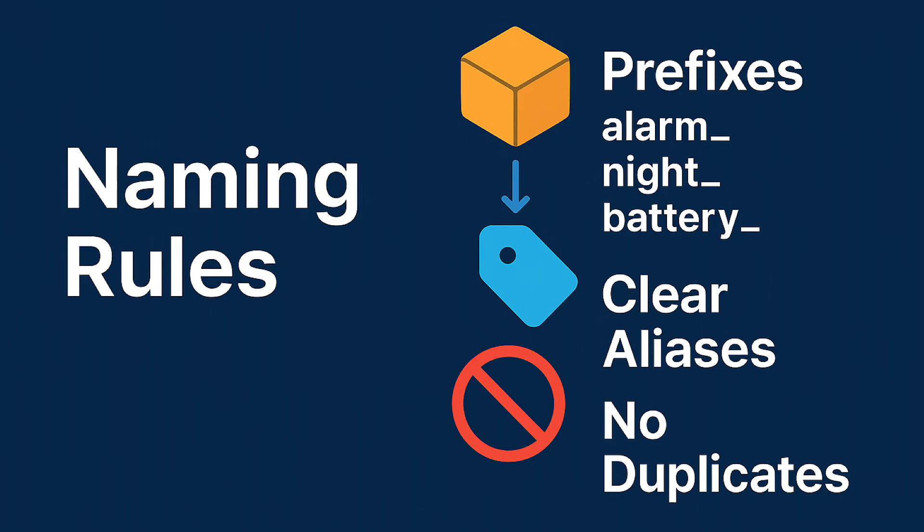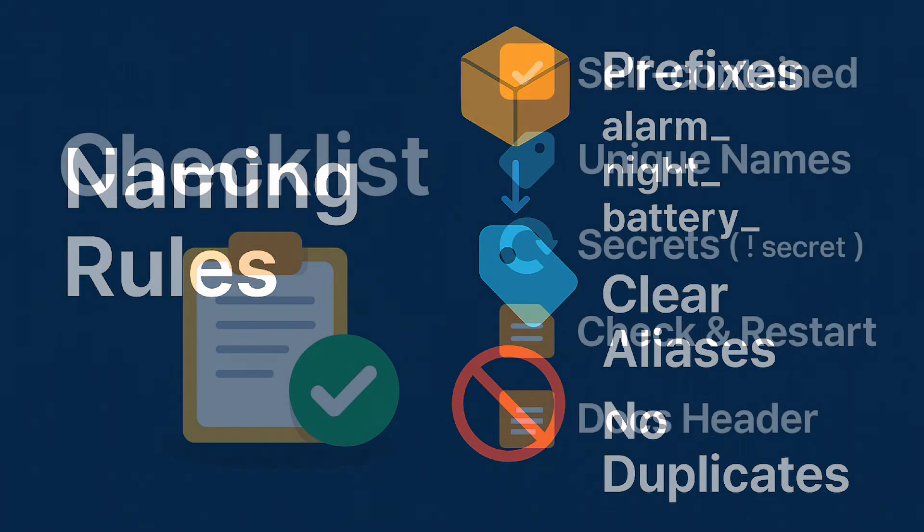Naming rules are very important for a large project. Use a package prefix in entity names — for example, alarm, night, battery. This speeds up search and eliminates conflicts. Use clear aliases — the alias should make it obvious what and when. For example: 'alarm start by time', 'night light motion sensor'. Do not use the same entity name in different packages.